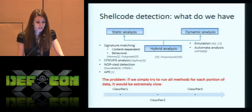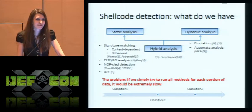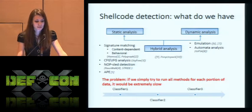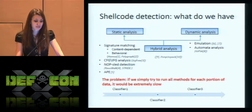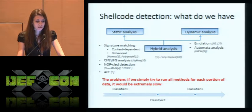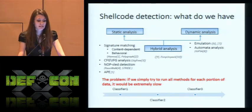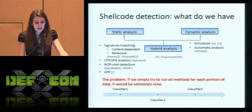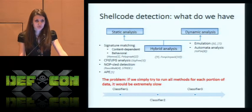What do we have in terms of shellcode detection methods? Mostly they exist in research papers only. If someone knows available open-source tools, I would be very happy to hear about them. The tools described in research papers can be divided into two classes: static analysis methods, dynamic analysis methods, and hybrid. The most common static analysis techniques are signature matching, control flow graph analysis, instruction flow graph analysis, NOP-sled detection, and methods of abstract execution. Dynamic analysis methods use emulation and automata analysis techniques. Hybrid analysis methods can use all of those.